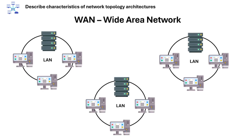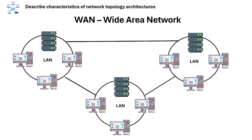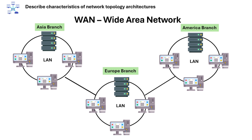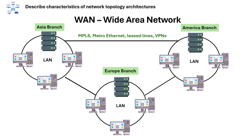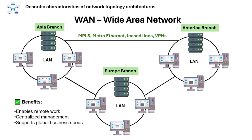Up next is the wide area network. This connects networks across geographically dispersed locations like cities or countries. For example, a headquarters connected to branch offices via leased lines, MPLS, or VPN. The benefits of a wide area network include enabling remote work, centralized management, and supporting global business needs.